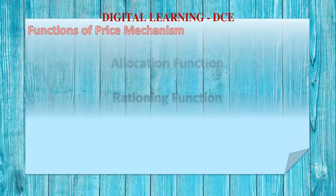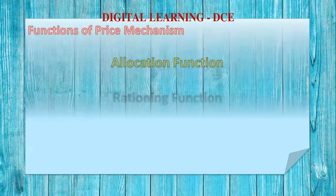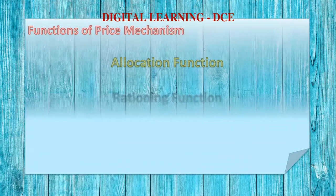Now, coming to the main element of this concept: the functions of price mechanism. The first function is the allocative function, or allocation function. Price mechanism — the interaction of price between demand and supply — helps us understand how to allocate resources among the production of various goods. If the demand for a product is higher, the price is higher, and most resources will be directed accordingly. Depending upon the intensity of demand, resource allocation takes place, leading to optimization of resource allocation.